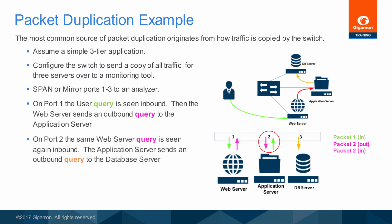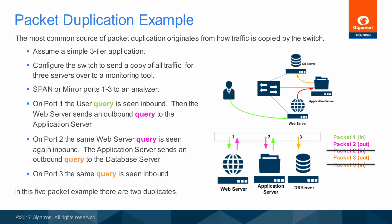When the web server query enters port 2, a copy is sent to the analyzer — this is the first duplicate packet. The application server requires information from the database, so it sends a third-tier query to the database server, and that is forwarded to the analyzer as it leaves port 2. When the application server query reaches port 3, a copy is sent to the analyzer, and this is the second duplicate packet. In total, out of five packets sent to the analyzer, 40% represents duplicate traffic.